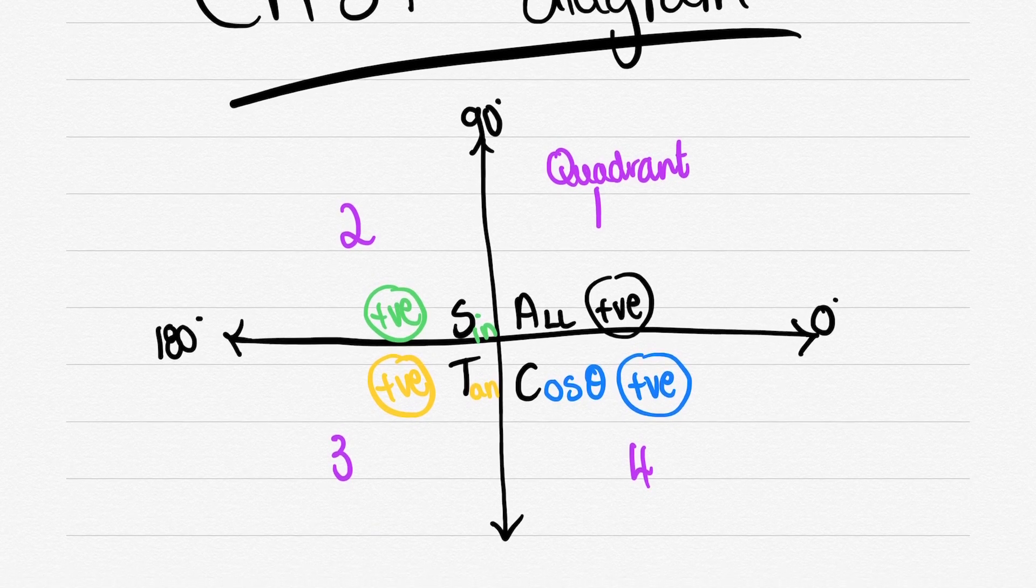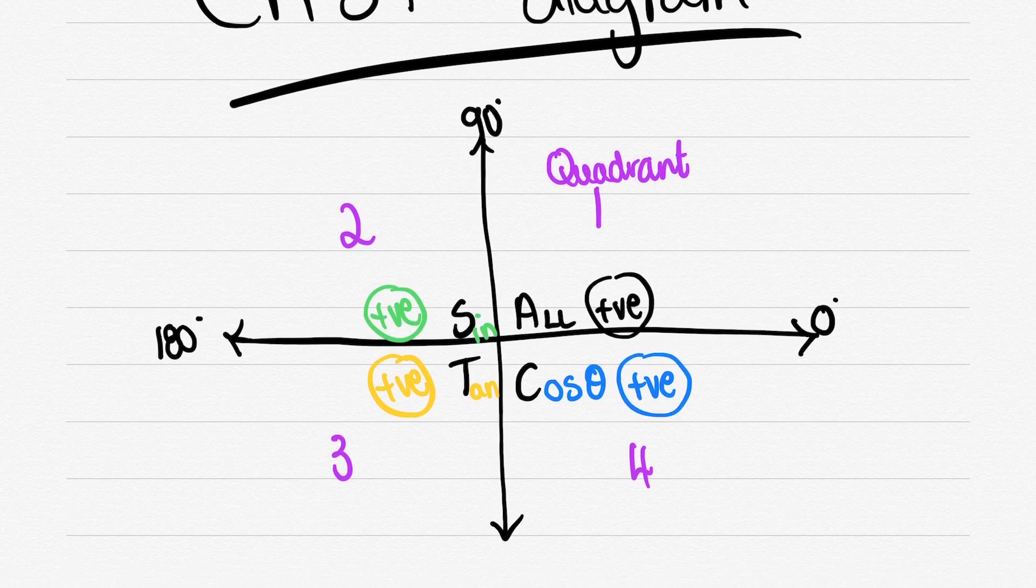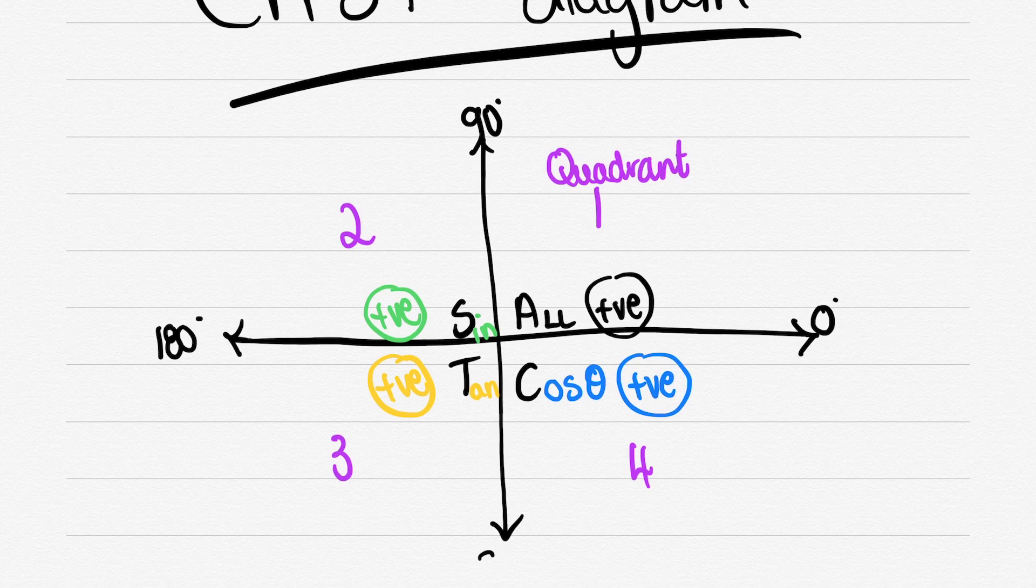Now as I've shown you, quadrant one is top right, two top left, three bottom left and four bottom right.